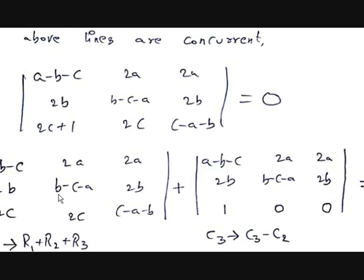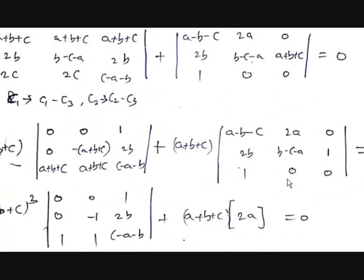In the first determinant, apply R1 → R1 + R2 + R3 (there is a property that allows us to add rows). In the second determinant, change the third column to C3 - C2. After R1 → R1 + R2 + R3, you get a+b+c, a+b+c, a+b+c in the first row, while the remaining two rows stay the same. In the second determinant with C3 - C2: 2a - 2a = 0, 2b - (b-c-a) = a+b+c, and 0 - 0 = 0.